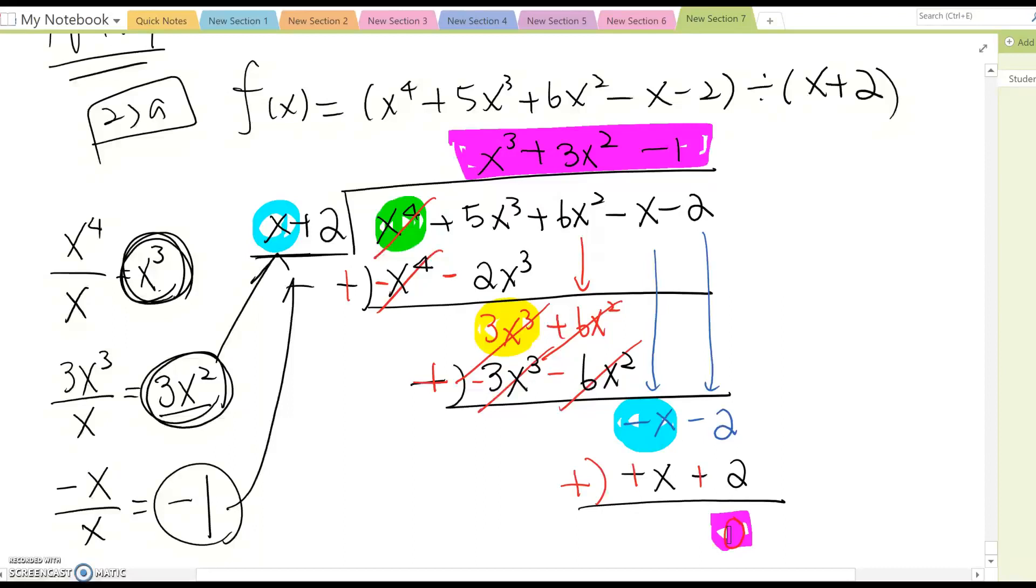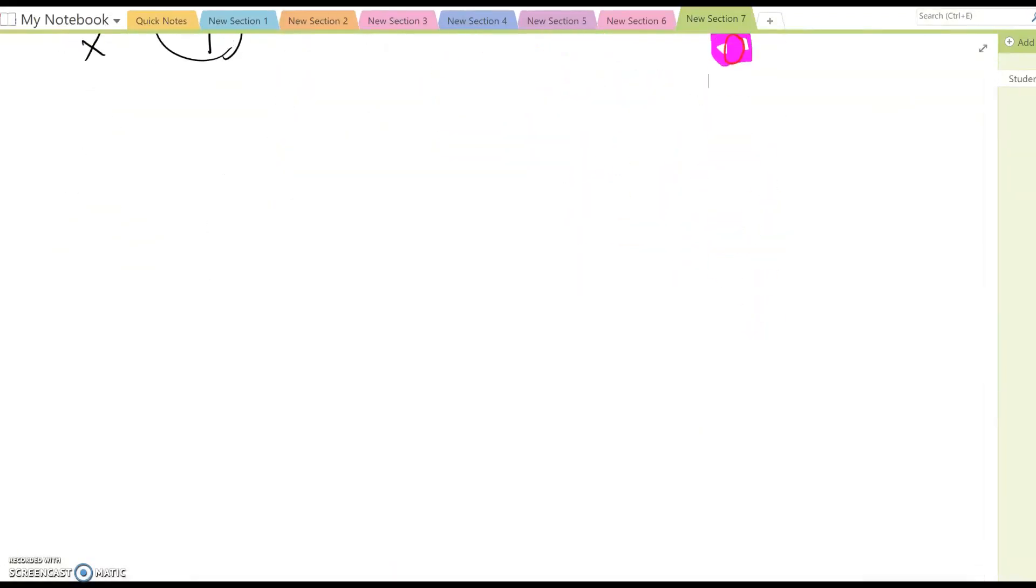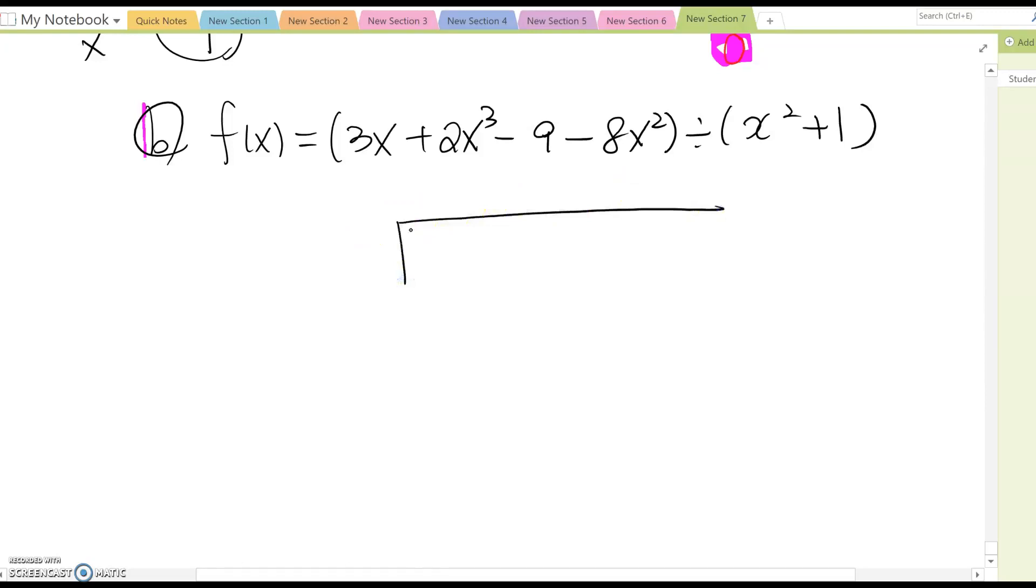Then let's talk about letter B. F(x) is equal to 3x plus 2x^3 minus 9 minus 8x^2 divided by x^2 plus 1. Same thing, we set up division form. But as you know, this is not order form here. So we better making descending order, from higher degree form to lower degree form. So it would be 2x^3 minus 8x^2 plus 3x minus 9.